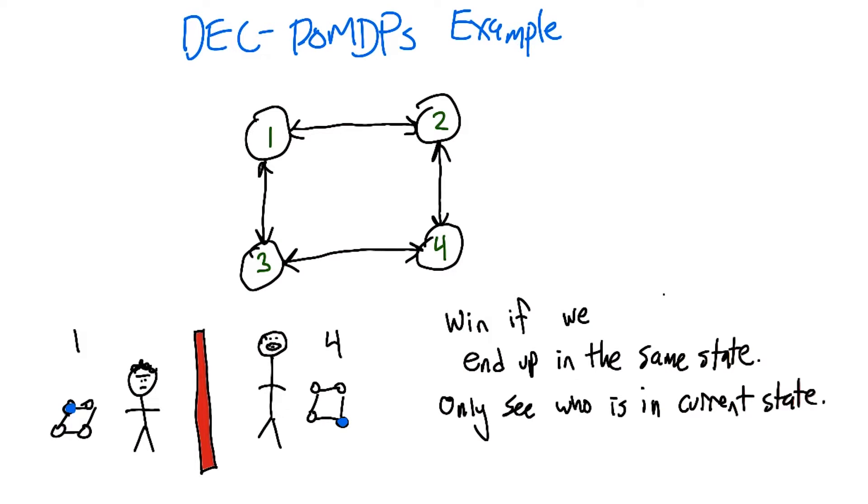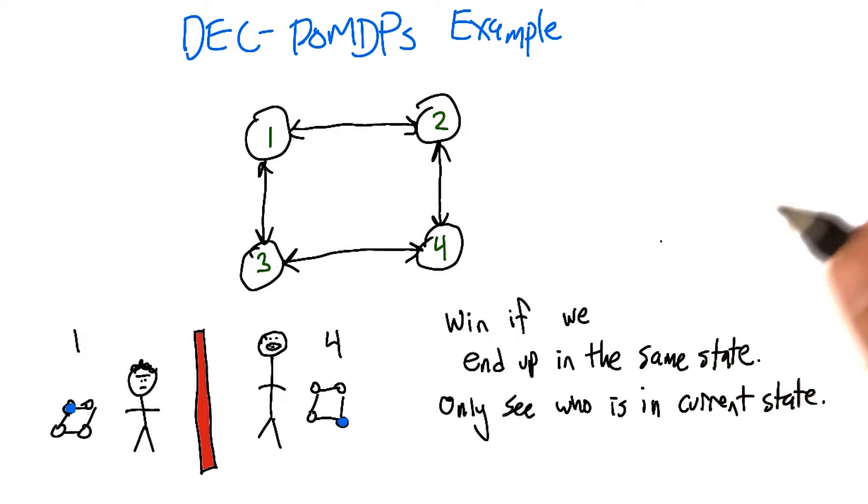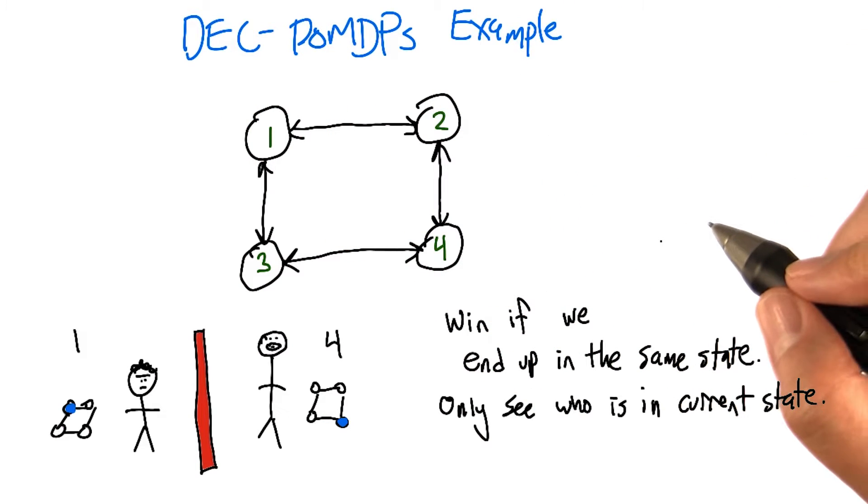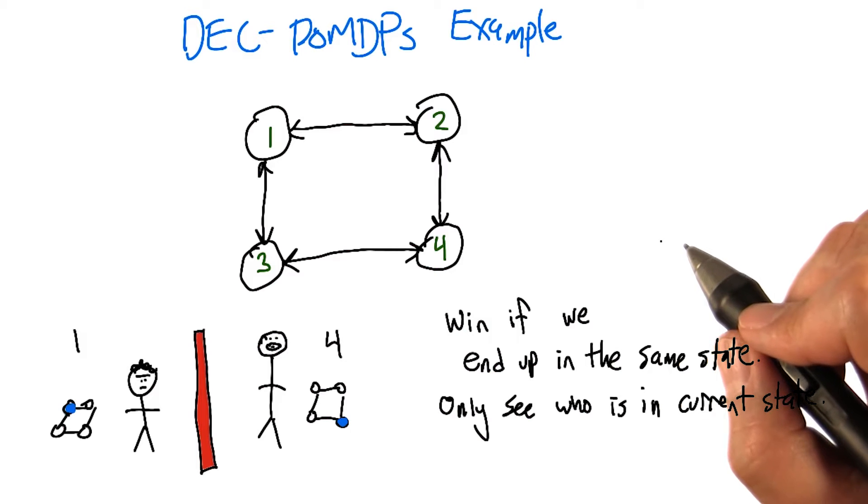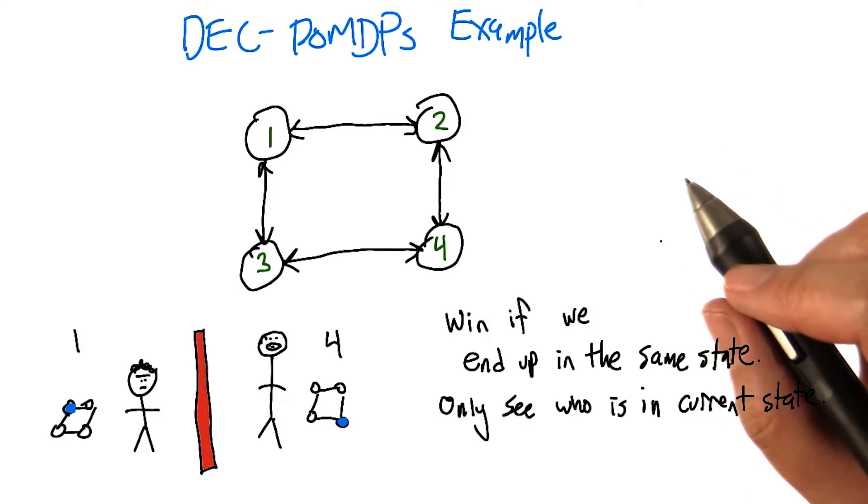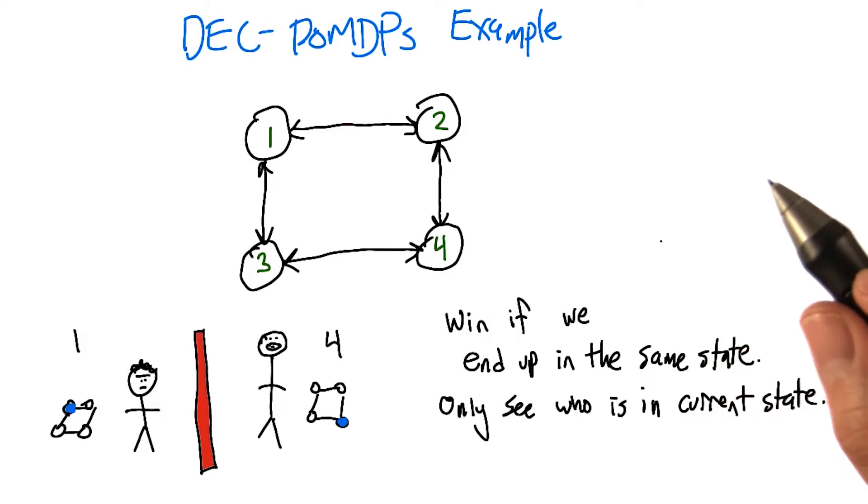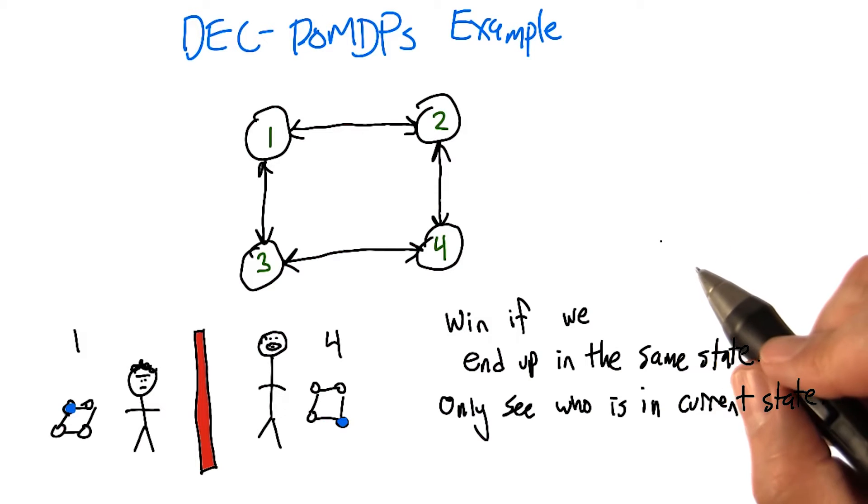And for what it's worth, in the DEC-POMDP model, it's a planning problem. So we can actually make up a strategy in advance as long as we don't use it as part of the strategy what state we're starting in because we don't know that.